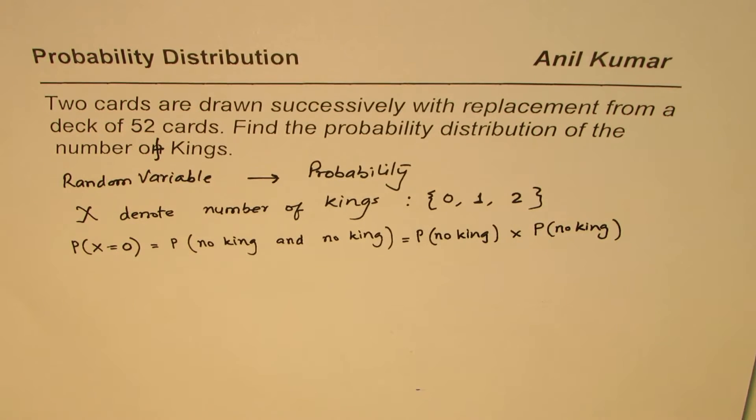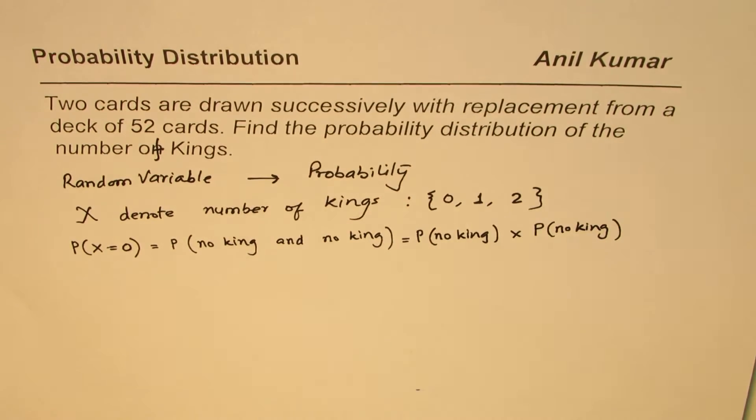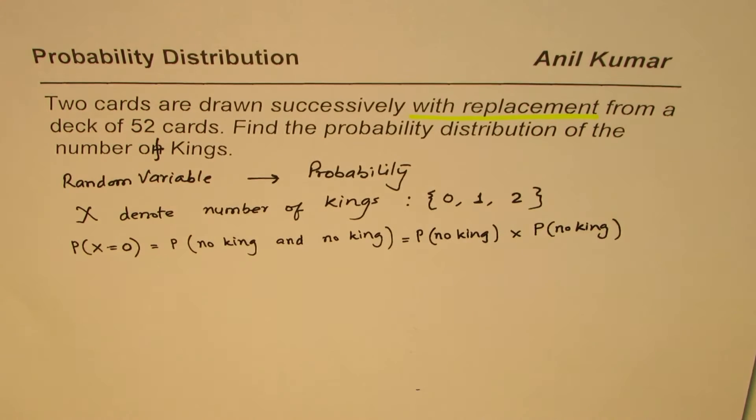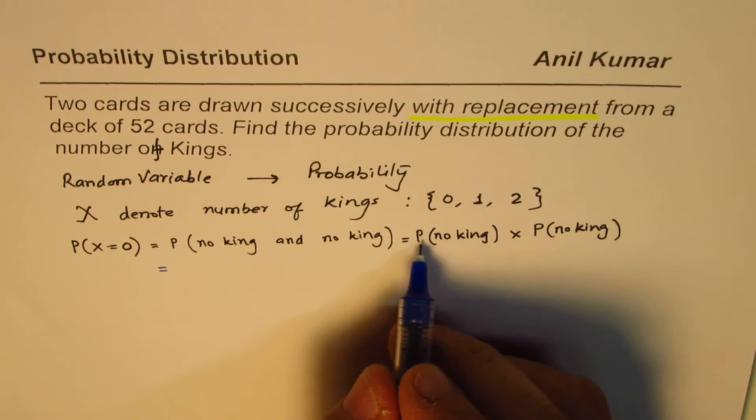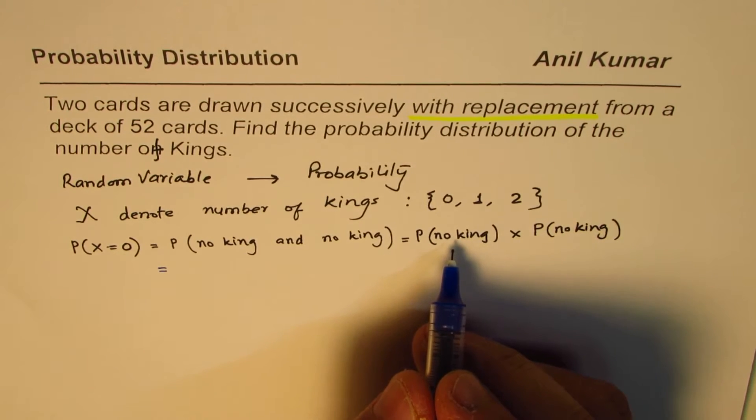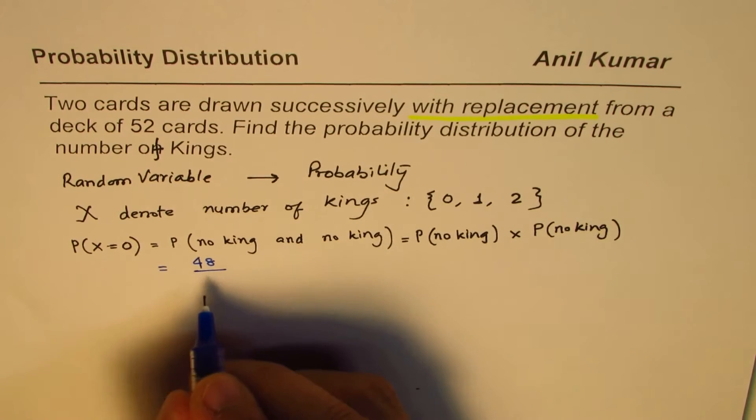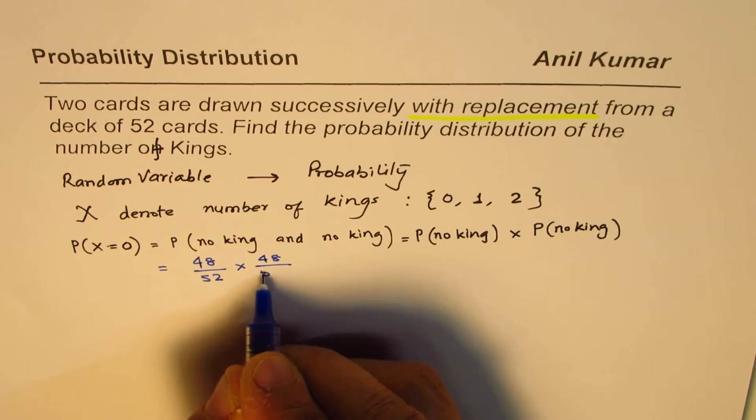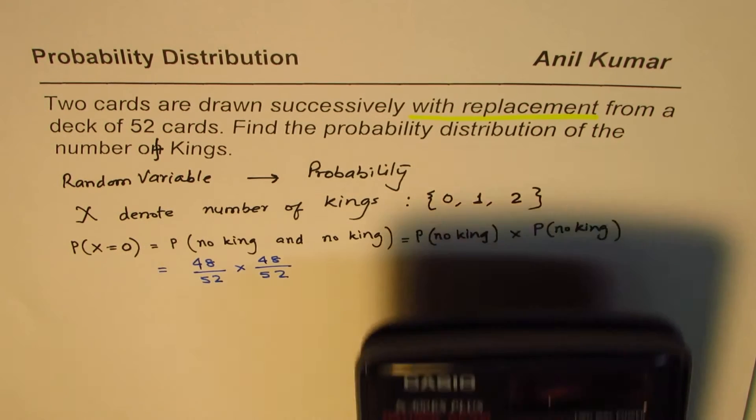Why am I multiplying them? Both these activities are independent, since we are replacing the card. We are drawing cards one after the another with replacement. When you do the replacement, these are independent events. Since they are independent events, their probabilities get multiplied. No king at all, that means we are making a draw from 52 minus 4, that is 48 cards. We will leave those four kings away. So 48 over 52 cards times 48 over 52.